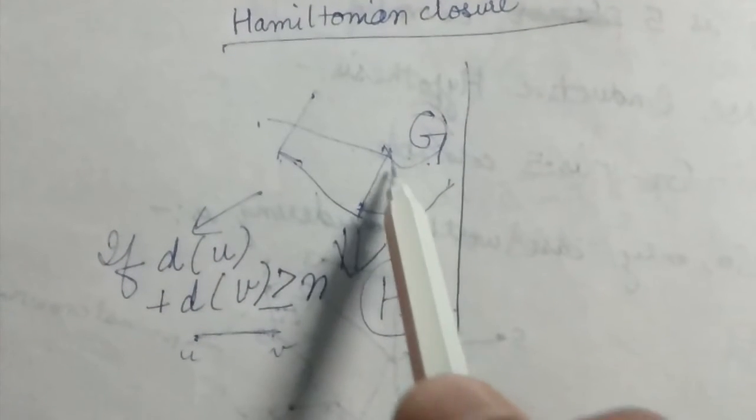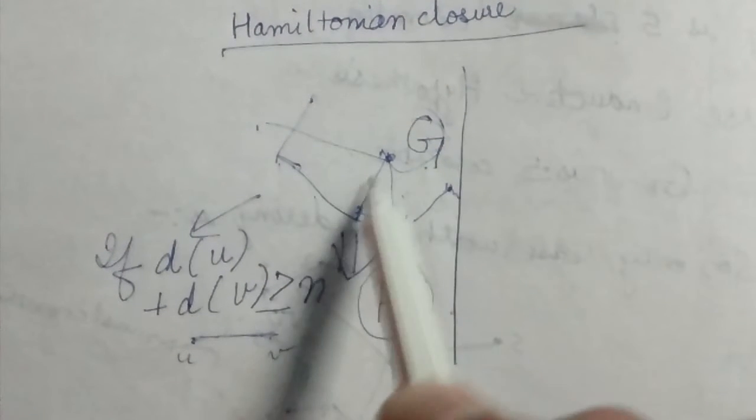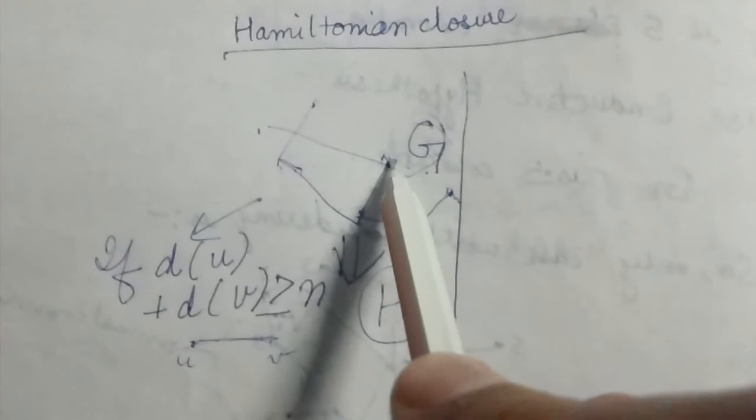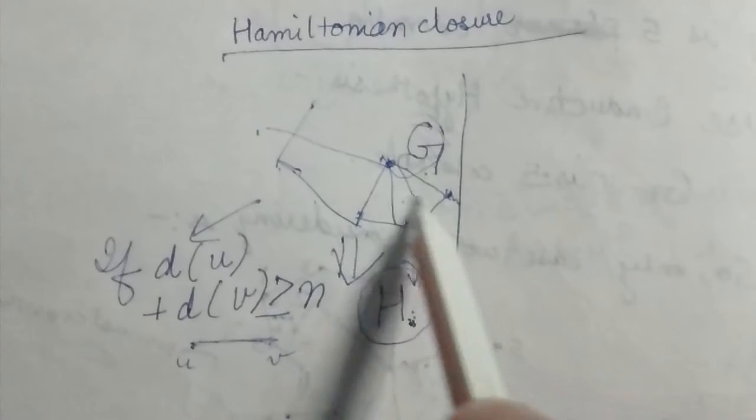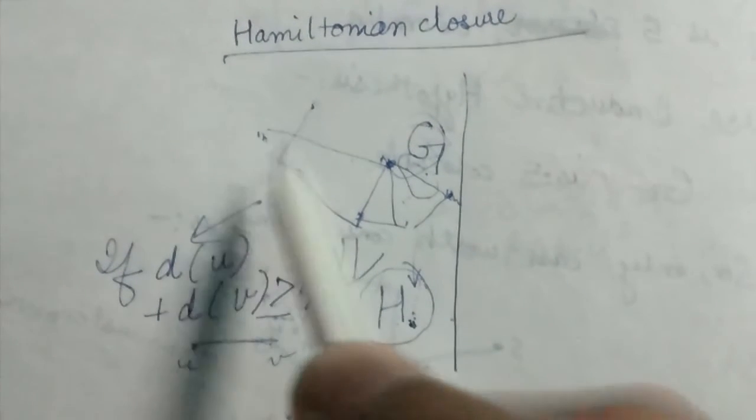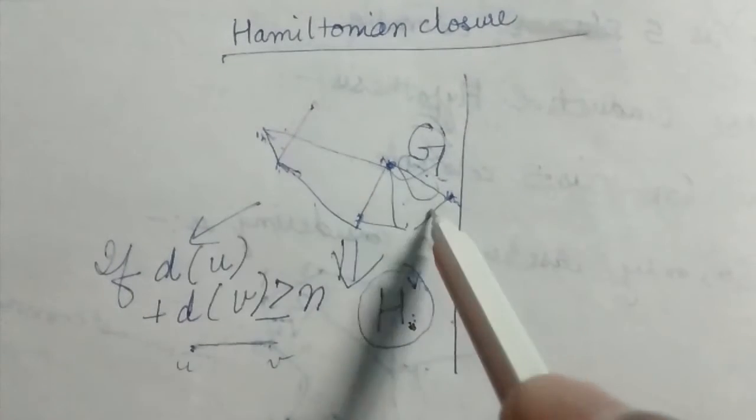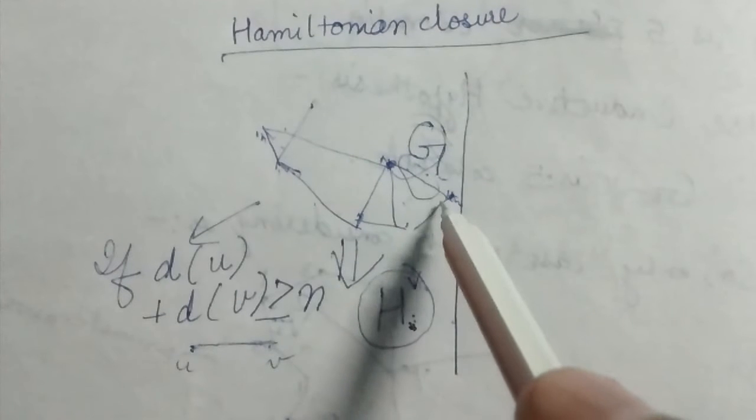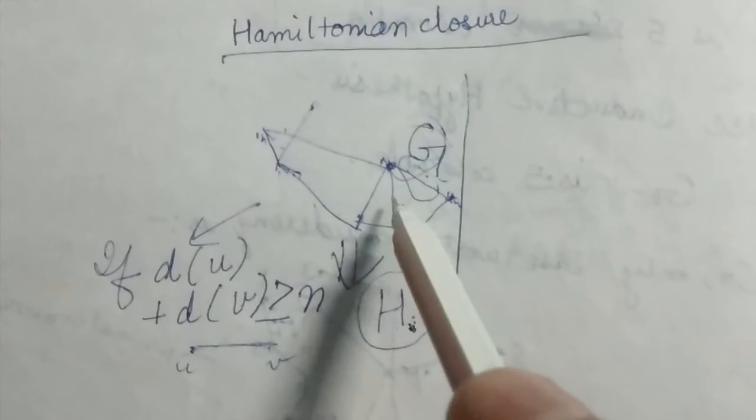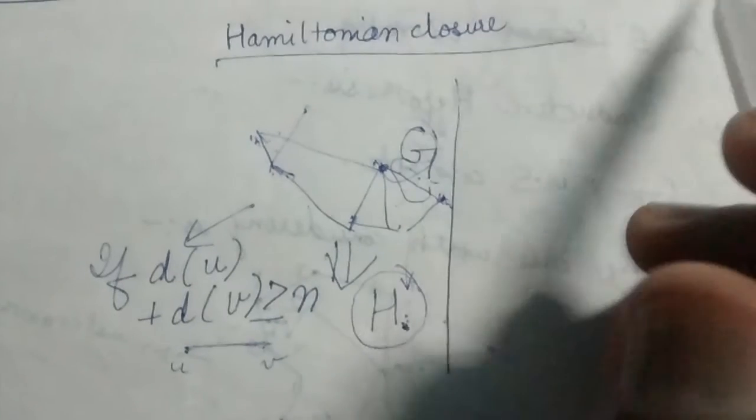So what I mean is suppose this plus this degree is greater than or equal to n. So I can add this edge also first. So it's my choice. I can add any of these edges first and I will get the same Hamiltonian closure. So this thing we want to prove.